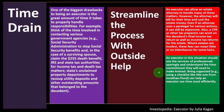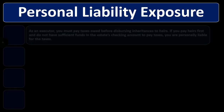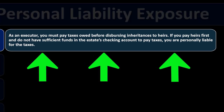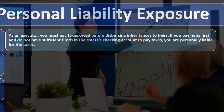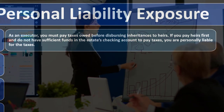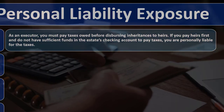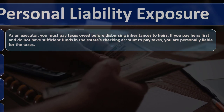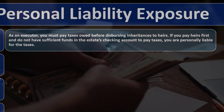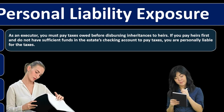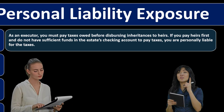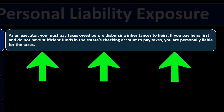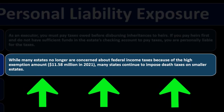A CPA or other tax preparer can work on the decedent's final income tax return as well as income tax returns for the estate. Where estates are modest, these professional fees can mean little or no inheritance for some heirs. An executor in this situation should use professional services sparingly and understand the time commitment they will need to make instead. Being organized, using a checklist, can help an executor use time most efficiently.